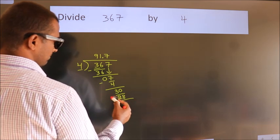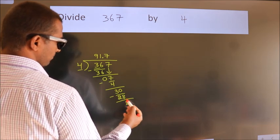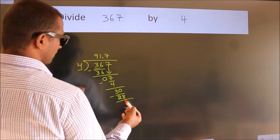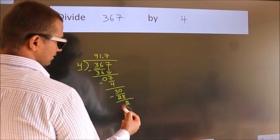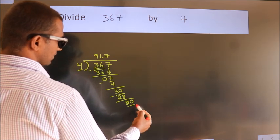Now we subtract. We get 2. After this, we already have the decimal, so directly take 0. So, 20. When do we get 20?